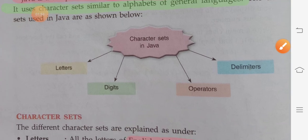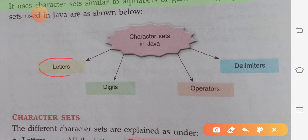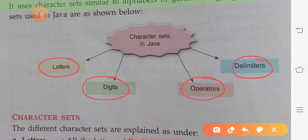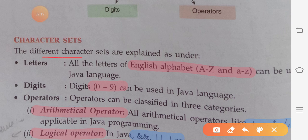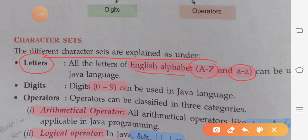The character sets in Java are: first, letters; second, digits; third, operators; and fourth, delimiters. Letters are just like English alphabets — capital A to Z and small a to z, meaning uppercase and lowercase letters. Digits means from zero to nine, and from combinations of zero to nine you can make any number of two, three, or four digits.